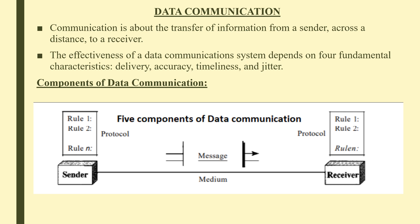Transmission medium is the physical path by which a message travels from sender to receiver. Examples include twisted pair wire, coaxial cable, fiber optic cable and radio waves. Protocol is a set of rules that govern data communication; it represents an agreement between the communicating devices.